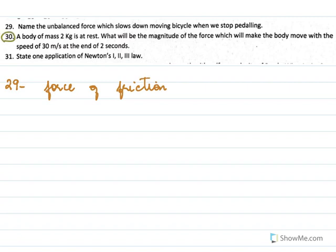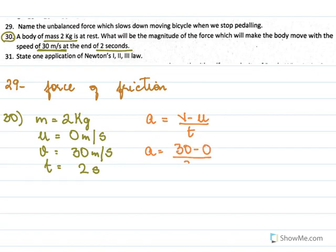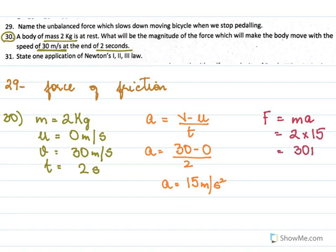The thirtieth problem: a body of mass 2 kg is at rest (u = 0 m/s). What force will make it move with a speed of 30 m/s at the end of 2 seconds? First find acceleration: a = (v − u)/t = (30 − 0)/2 = 15 m/s². Then force: F = m × a = 2 × 15 = 30 Newtons.